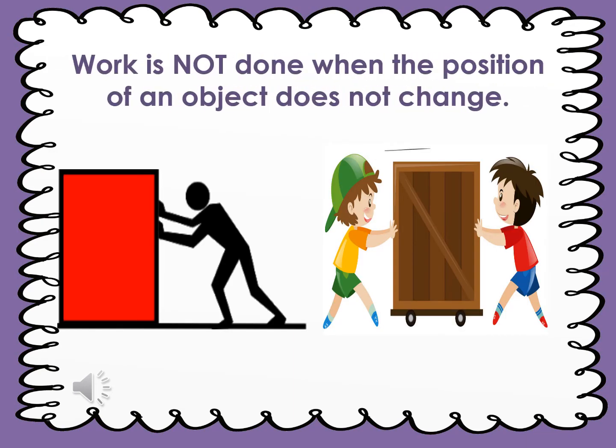Work is not done when the position of an object does not change. Imagine you are pushing a wall — the wall cannot move, so work is not done. Another example: when two boys push each other with the same force, both boys cannot move. So work is not done here.